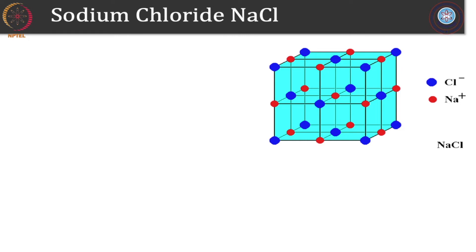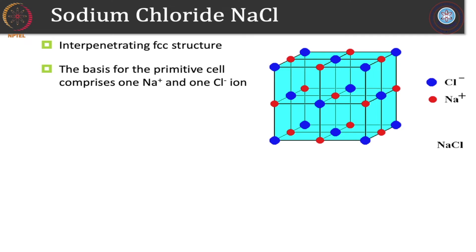The first example is NaCl — the sodium chloride structure. At the origin of this cube we have a chlorine atom, and here we have a sodium, another sodium, another chlorine. At each corner of the big cube we have chlorines, and also at the faces we have chlorines, so it is a face-centered cubic structure. Considering sodium and chlorine together, it is an interpenetrating structure — chlorine at the origin and sodium at the body center.